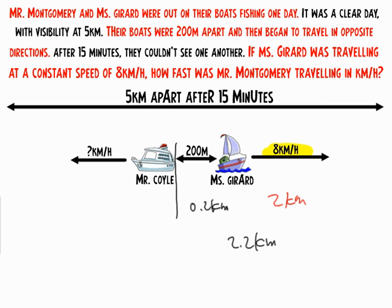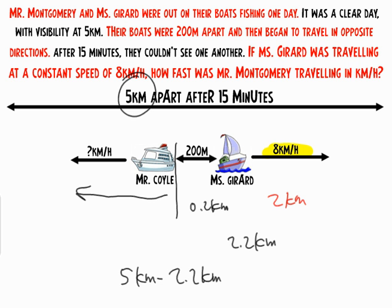But Mr. Coyle did go somewhere. Mr. Coyle traveled far enough so that eventually they were 5 kilometers apart. So if we take 5 kilometers and subtract the 2.2 kilometers — that's the 2 kilometers Ms. Girard went plus the 200 meters they were already apart — that means Mr. Coyle had to travel 2.8 kilometers.